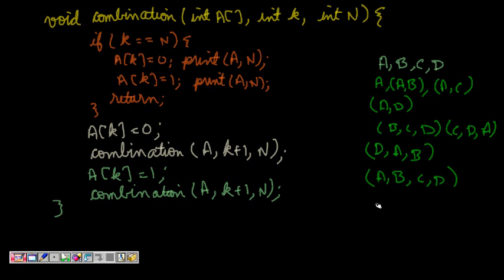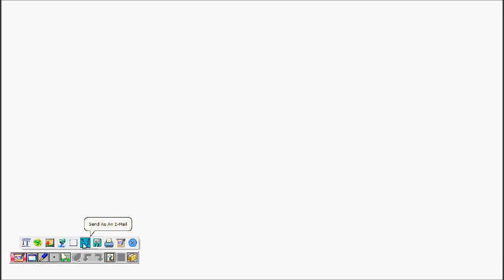Total combinations are 2 to the power of 4, which equals 16. Now the question is how to solve it — how to print all 16 possible combinations. We can use recursion to approach this problem.